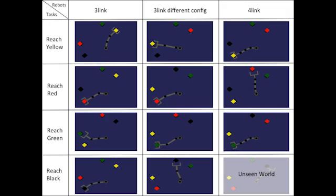To illustrate this method, we show the performance of modular policy networks for three scenarios in simulation. The first involves reaching for differently colored blocks. In this experiment, we have three robots: a three-link robot, a modified three-link robot, and a four-link robot. We have four tasks, one corresponding to reaching for each of the four colored blocks: red, green, yellow, and black.